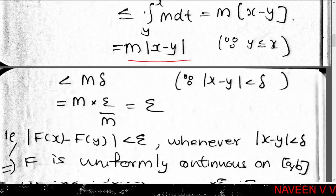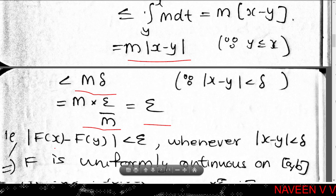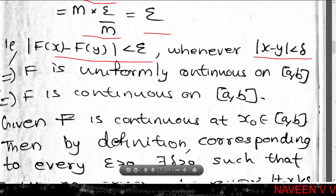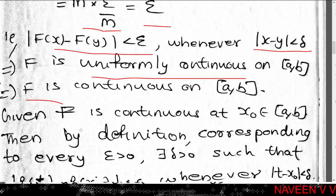Since |x - y| < delta = epsilon/M, we get |F(x) - F(y)| ≤ M · |x - y| < M · (epsilon/M) = epsilon. So |F(x) - F(y)| < epsilon whenever |x - y| < delta, which implies F is uniformly continuous on [a,b], and therefore F is continuous on [a,b]. This completes the proof of the first part.